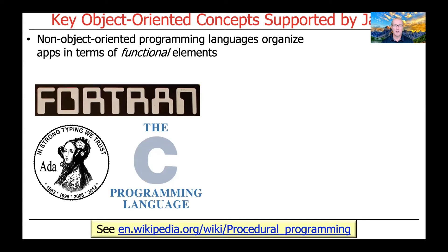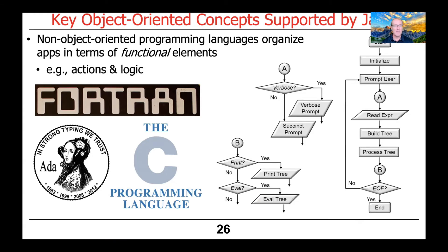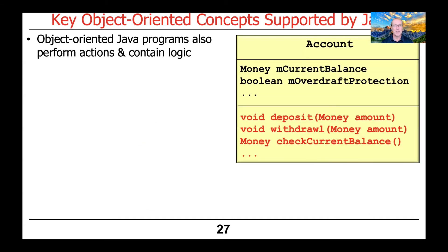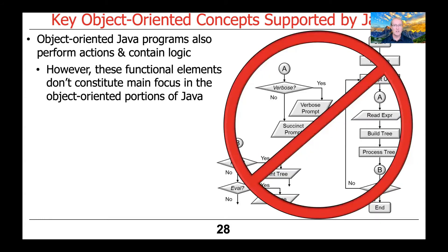Non-object-oriented programming languages, such as C or Fortran, typically organize applications in terms of functional or procedural elements, often known as subroutines. These often focus on actions and logic, described with things like state diagrams, control flow diagrams, and state charts. Of course, object-oriented languages like Java also perform actions and contain logic — things like the deposit, withdrawal, or check current balance methods in the account class — however, these functional elements don't constitute the main design focus in the object-oriented portions of Java.